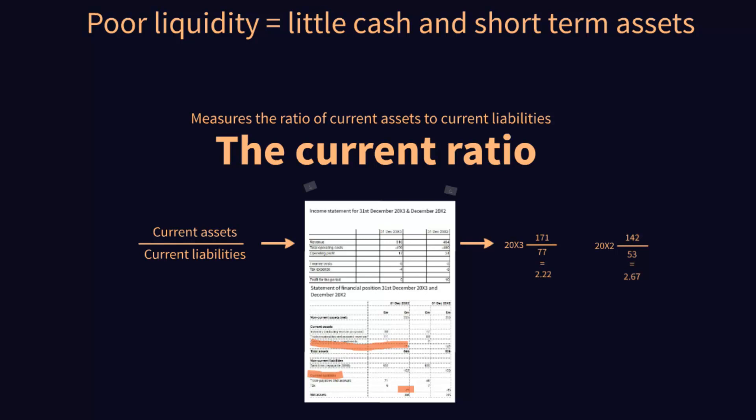Generally, anything over one is considered to be healthy. You don't want a current ratio of less than one because that means you've got more liabilities than assets. But the higher the number, generally the better. As a summary of the current position, the ratio is worse, meaning we have fewer assets available as a proportion of our liabilities to pay off our debts.